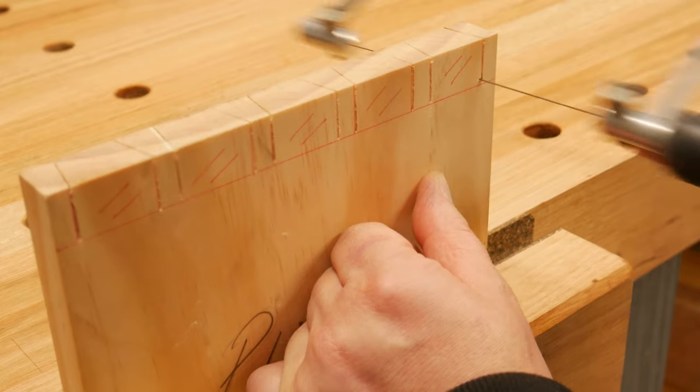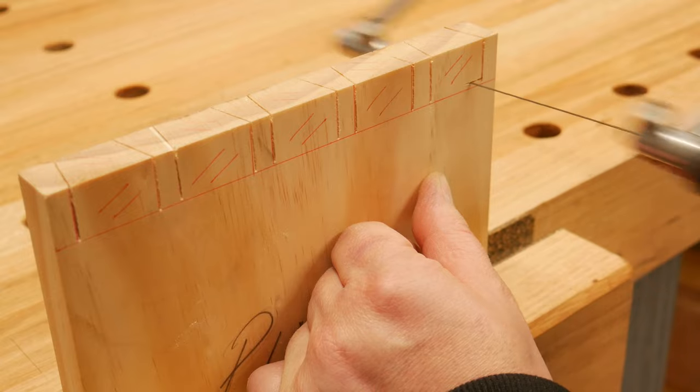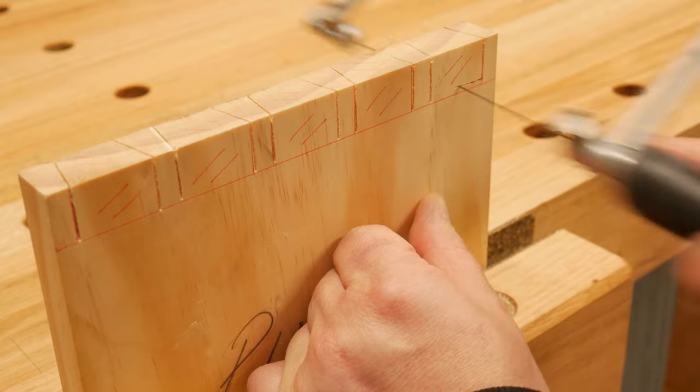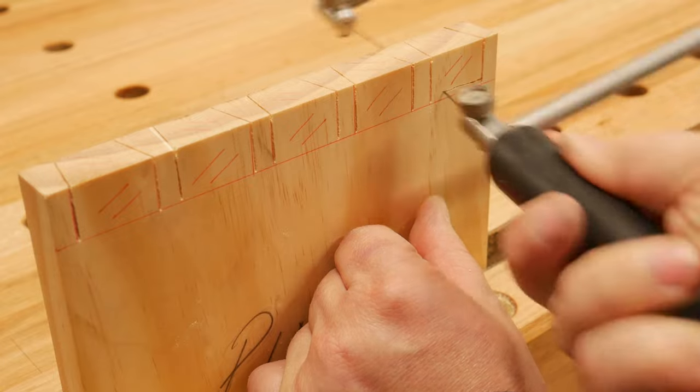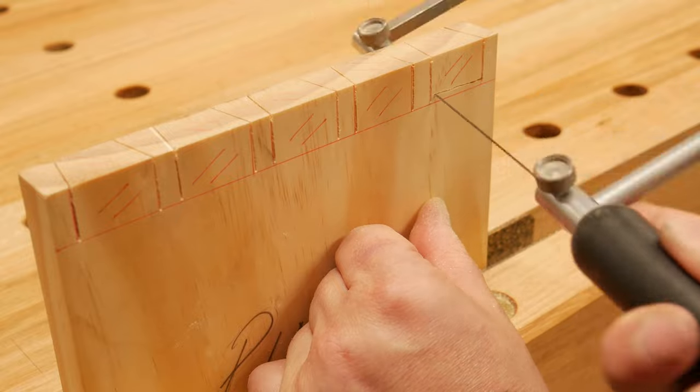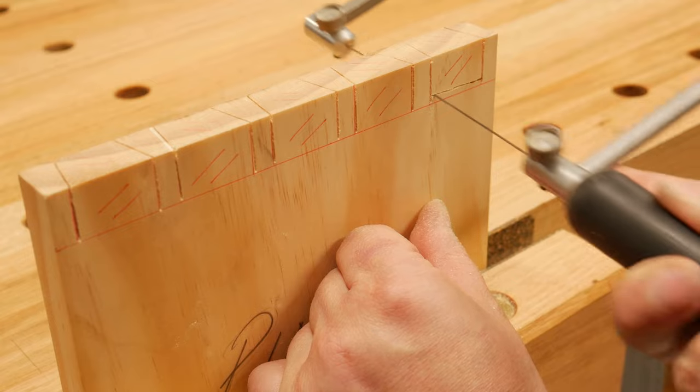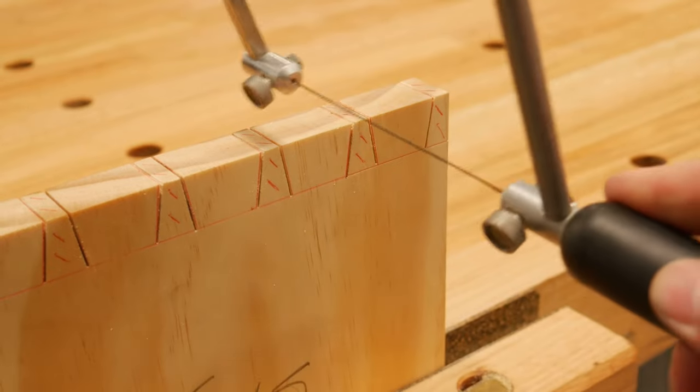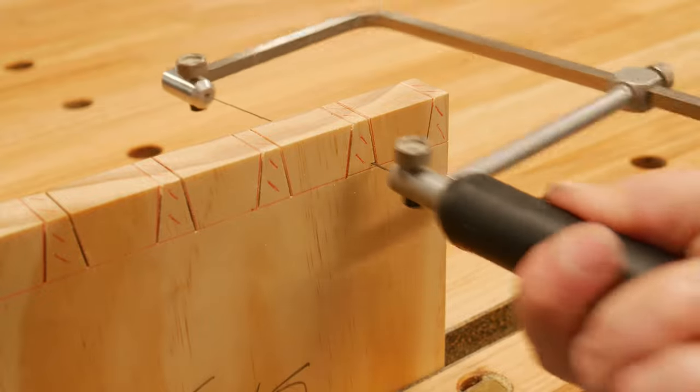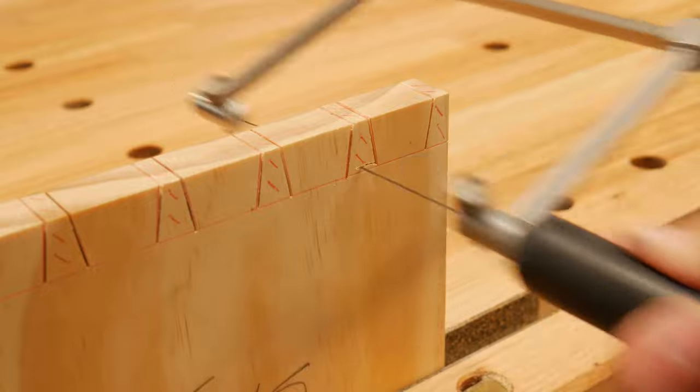Now it's time to whip out the fret saw and remove the waste. I need a heap more practice getting my cut closer to that baseline. For now I am just focusing on angling the saw at the end of the cut and slowing down, so I don't cut into the side of the pin. The same applies for the tailboard. The fret saw gets dropped in down to the baseline. Lift it up a little, turn to the side and cut just above the line.